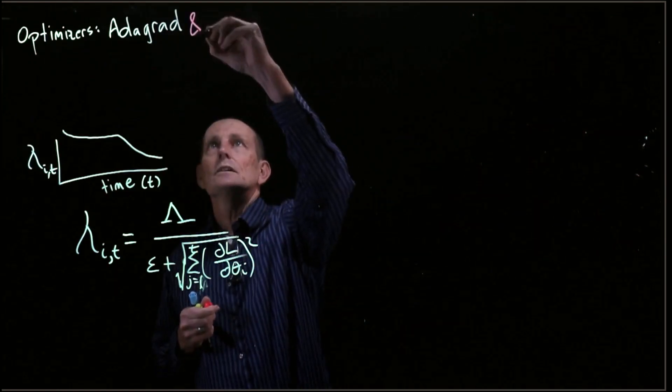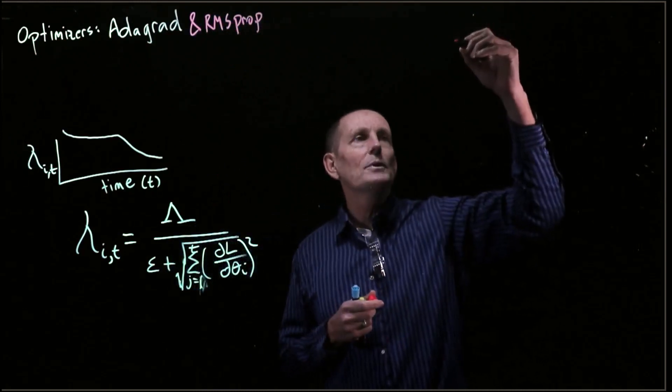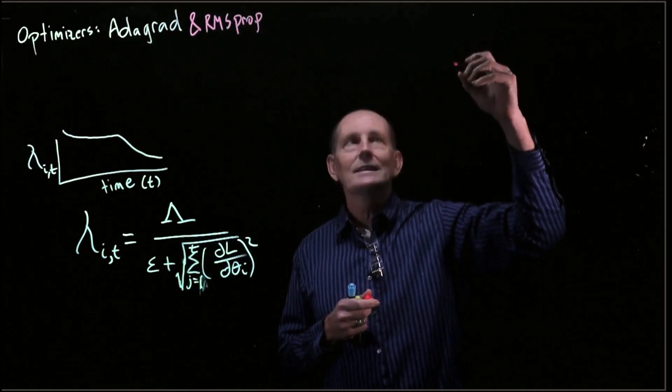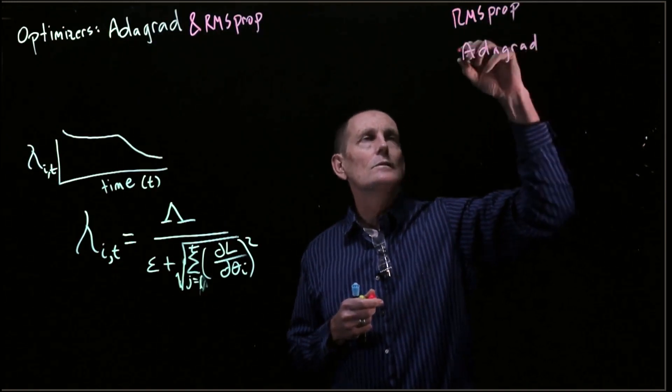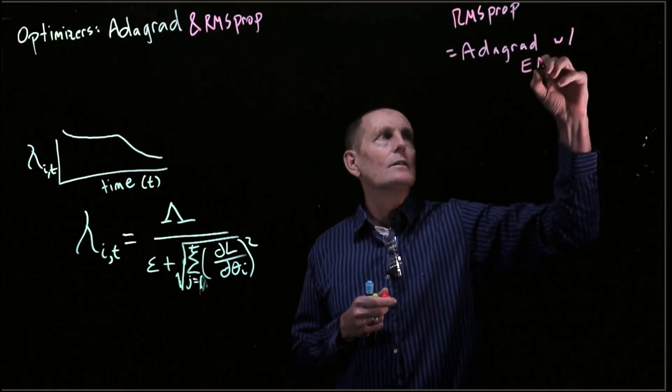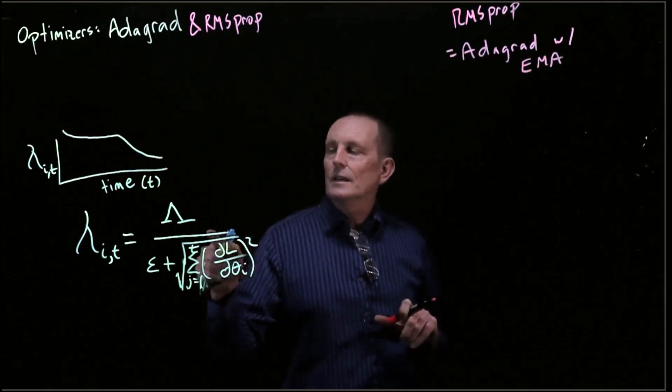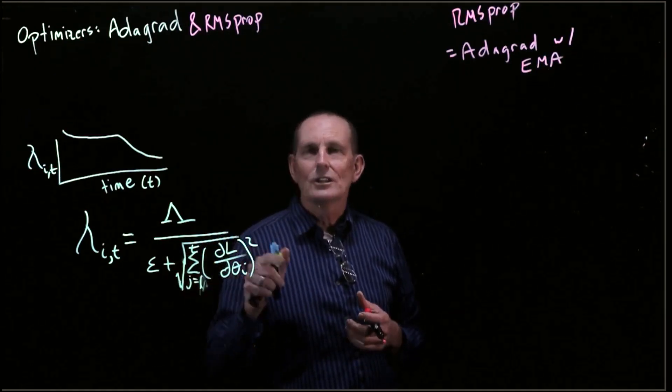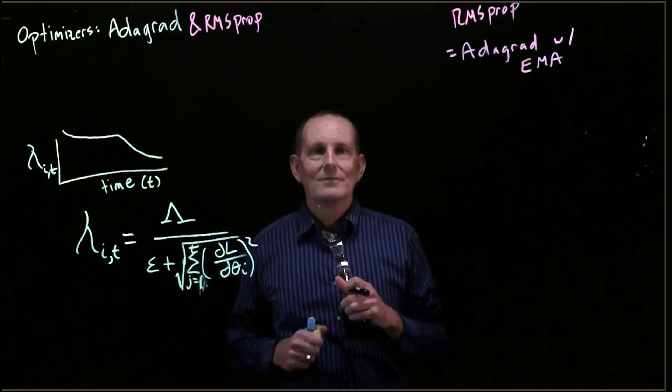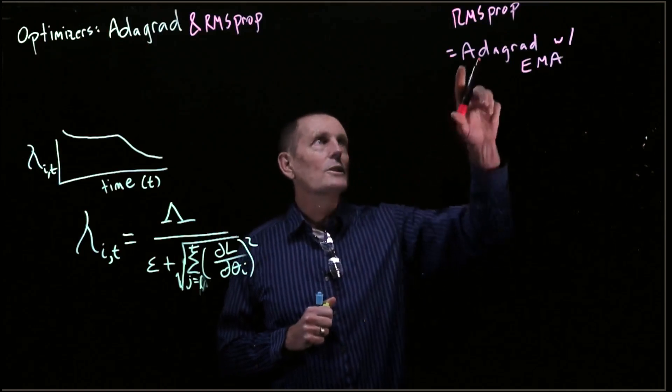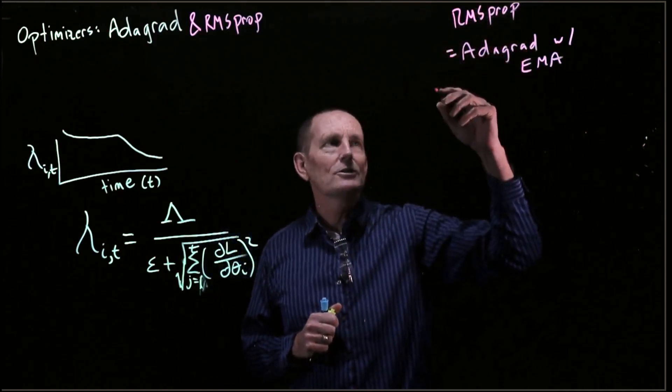So we shouldn't actually look back at everything in the past. So let's look at RMSProp. RMSProp is basically AdaGrad with an exponential moving average. So instead of calculating an overall average from the beginning of time, we use an exponential moving average.